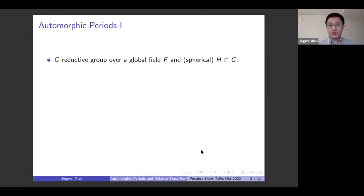So let me start with the setup. We start with a reductive group G over a global field F and some subgroup H, which is spherical.